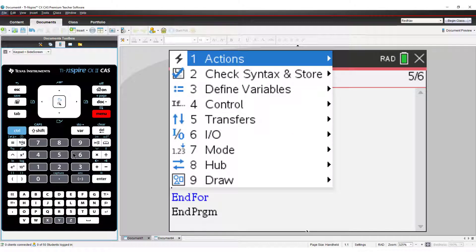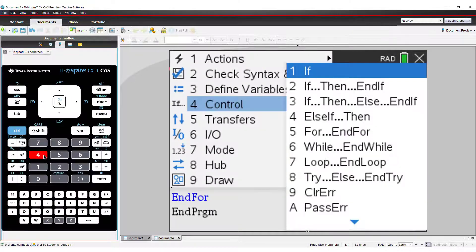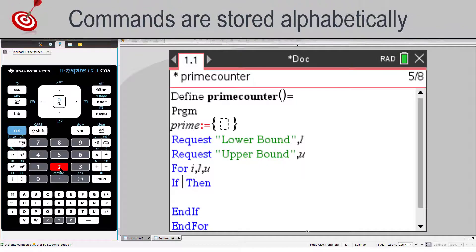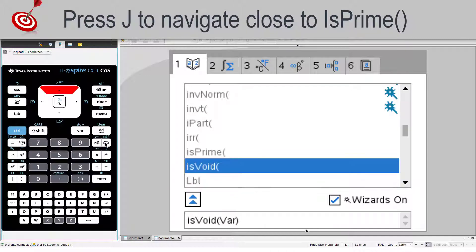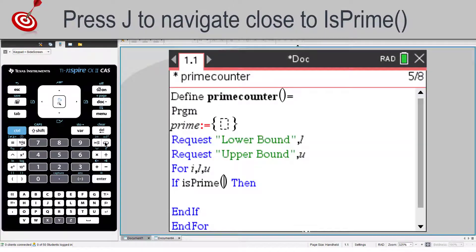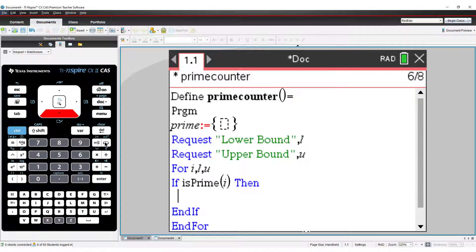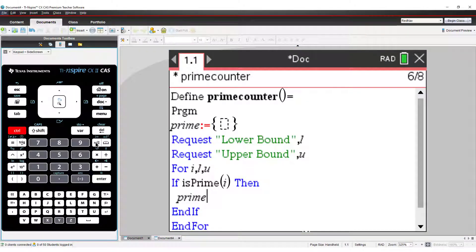Now I need to check if the number is prime. The isPrime command returns true if the number is prime and false if it isn't. So it's a perfect condition statement.